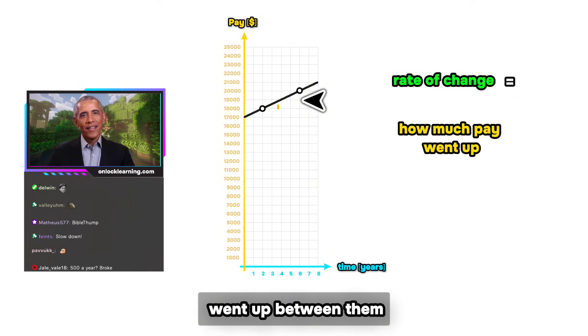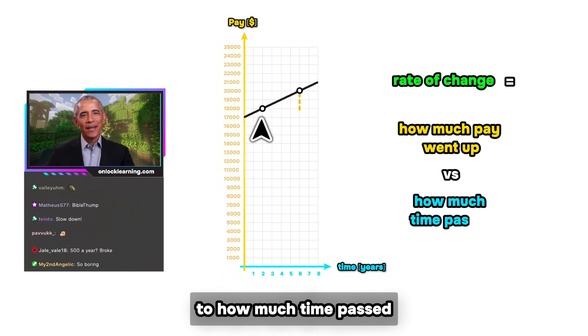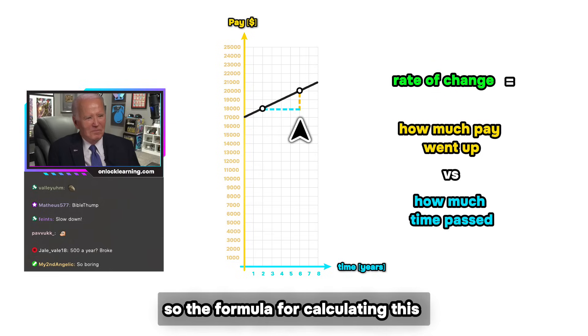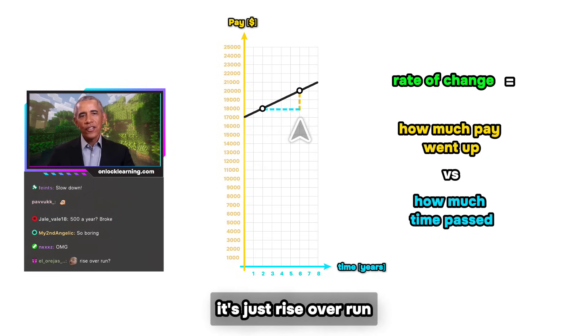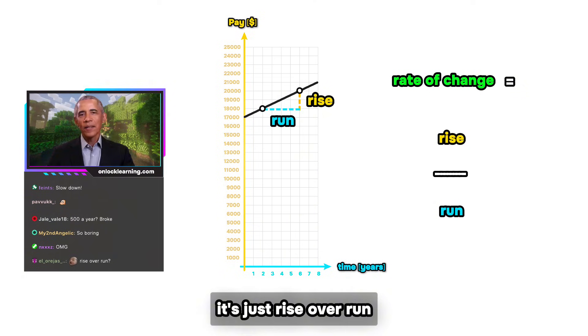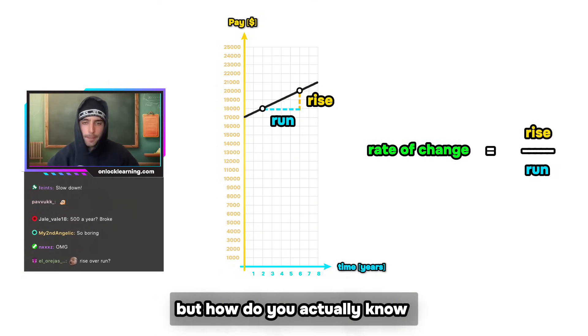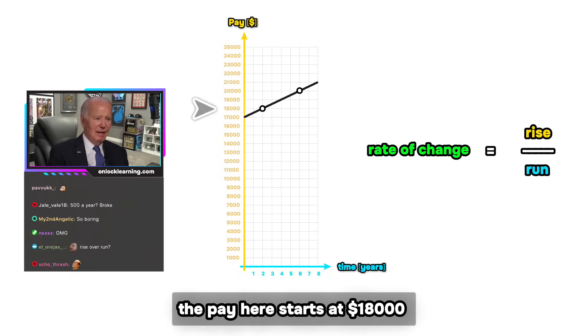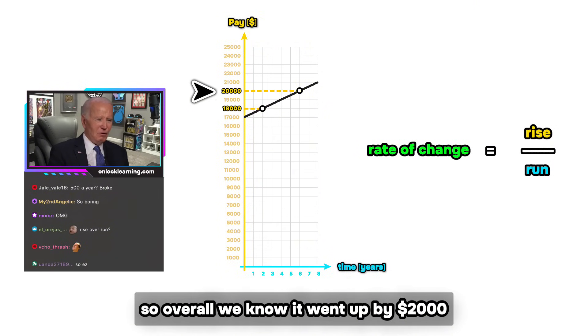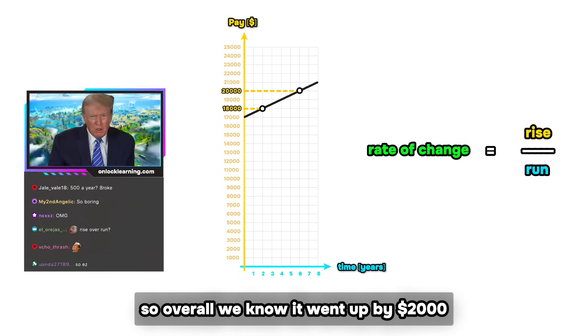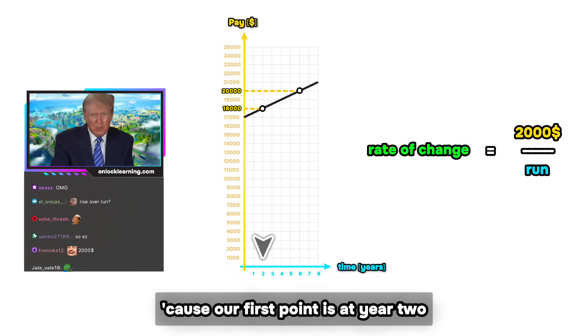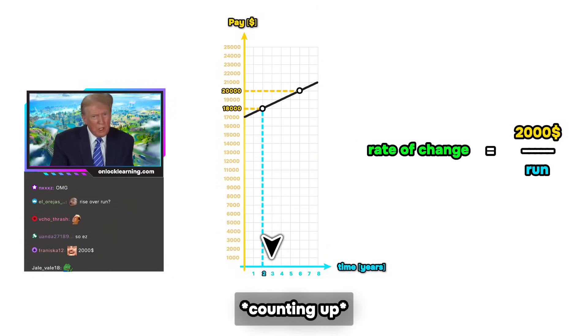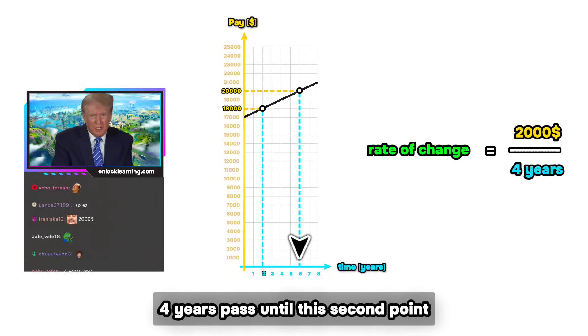So the formula for calculating this is super simple. It's just rise over run. Yo, I think I've heard of that before. But how do you actually know what the rise and run is? Yo, it's so easy. The pay here starts at 18 grand and rises up to 20, so overall we know it went up by two thousand dollars. Yep. And the run is just four years, because our first point is at year two, then one, two, three, four years pass until this second point. So you basically just like read it off the graph?